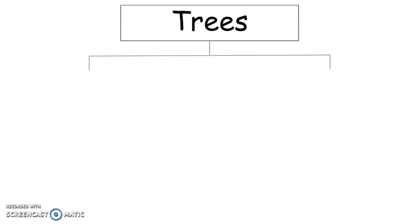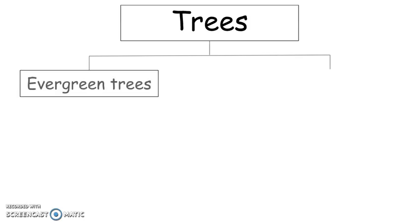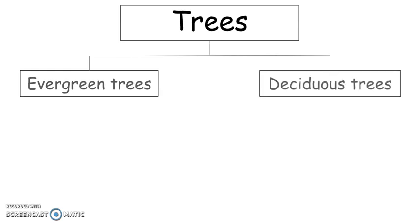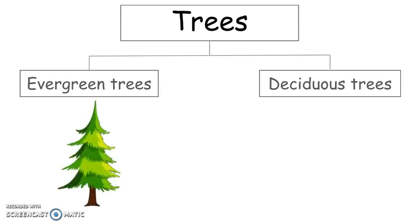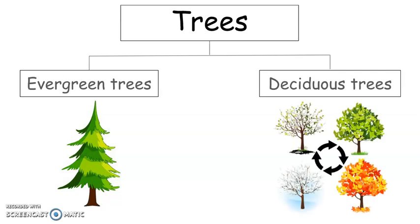To start, there are two main types of trees. There are evergreen trees, and deciduous trees. Evergreen trees keep their leaves all year. Deciduous trees lose their leaves in autumn and winter. Let's look at each one.